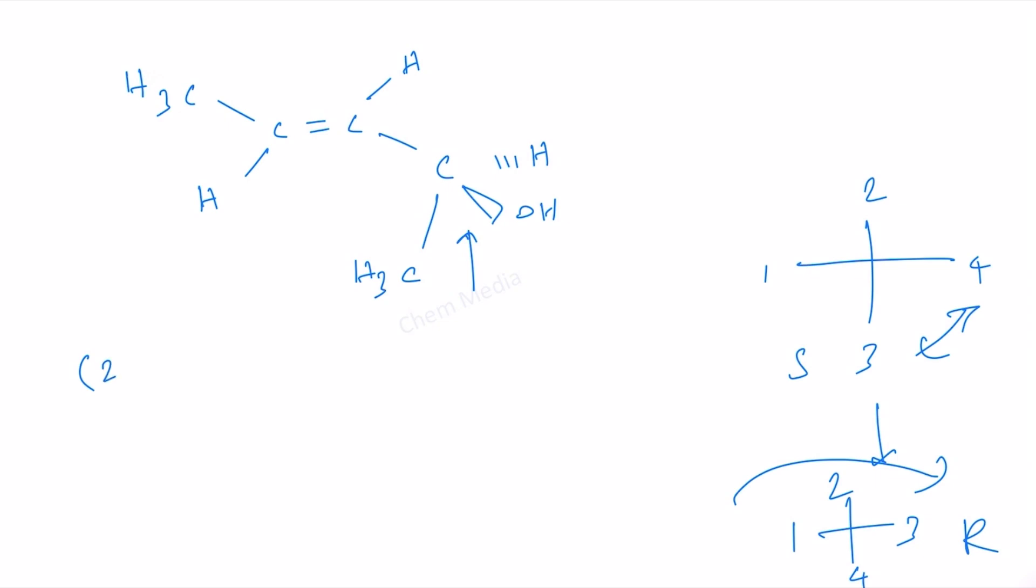Therefore 2S. This is higher priority, this is lower priority, this is lower priority, this is higher priority as per the Cahn-Ingold-Prelog rules. Our priorities are on the opposite side, this means it is E. Therefore 2S,3E-pent-3-en-2-ol, that should be the correct IUPAC name.